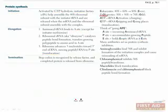The prokaryotic ribosome is different from the eukaryotic ribosome. It has the 30S and 50S subunits, rather than the 40S and 60S that eukaryotes have. Since it's different, we can use drugs that target it specifically with little or no effect on our ribosomes. For example, aminoglycosides inhibit initiation by binding the 30S subunit. Chloramphenicol inhibits the peptidyl transferase activity of the 50S subunit, and macrolides block translocation. These are all discussed in more detail in the microbiology chapter.